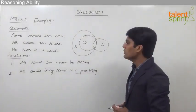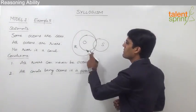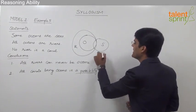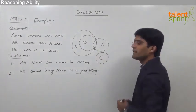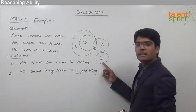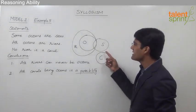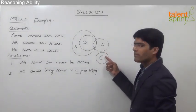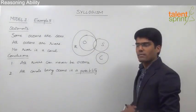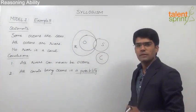The last statement is no river is a canal, so there should not be any common part between river and canal. We can take canals completely outside the rivers. There are various ways of placing canals — we could have overlapping between canals and seas — but going by the basic diagram, let us go for minimum overlapping.